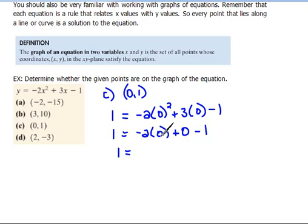So negative 2 times 0 would be 0 plus 0 minus 1. 0 plus 0 minus 1 is negative 1.